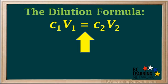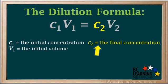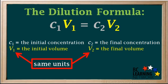The formula we'll use in the examples that follow is C1V1 equals C2V2, where C1 is the initial concentration, V1 is the initial volume, C2 is the final concentration, and V2 is the final volume. It's always important when using this formula to make sure that V1 and V2 are in the same units. If they're in different units in the question, then one of them will have to be converted.